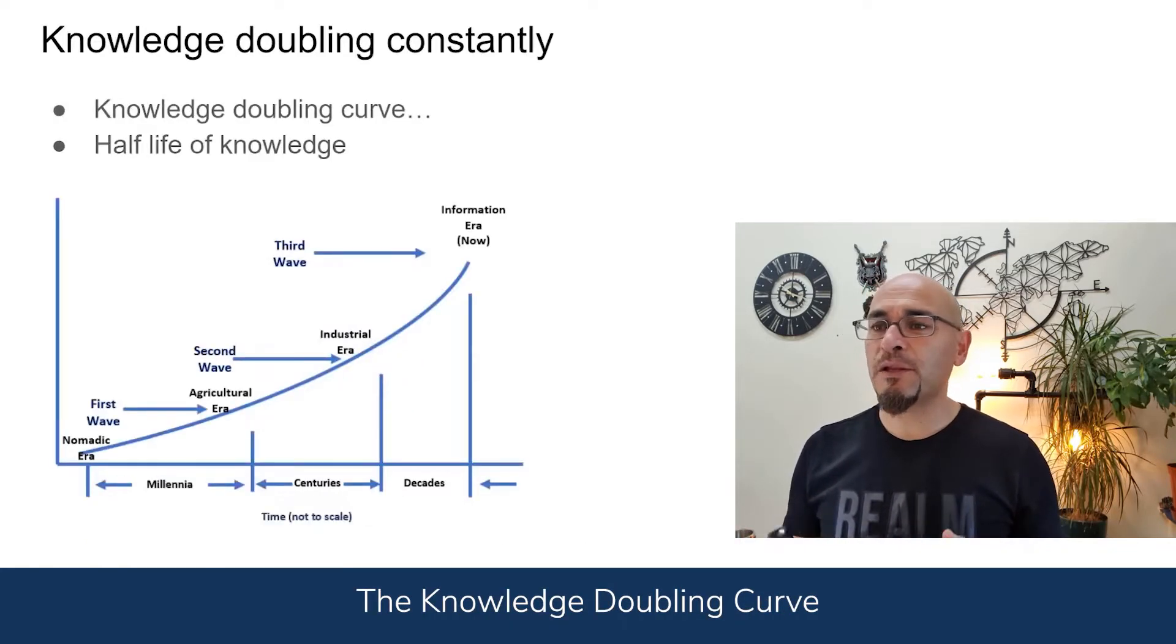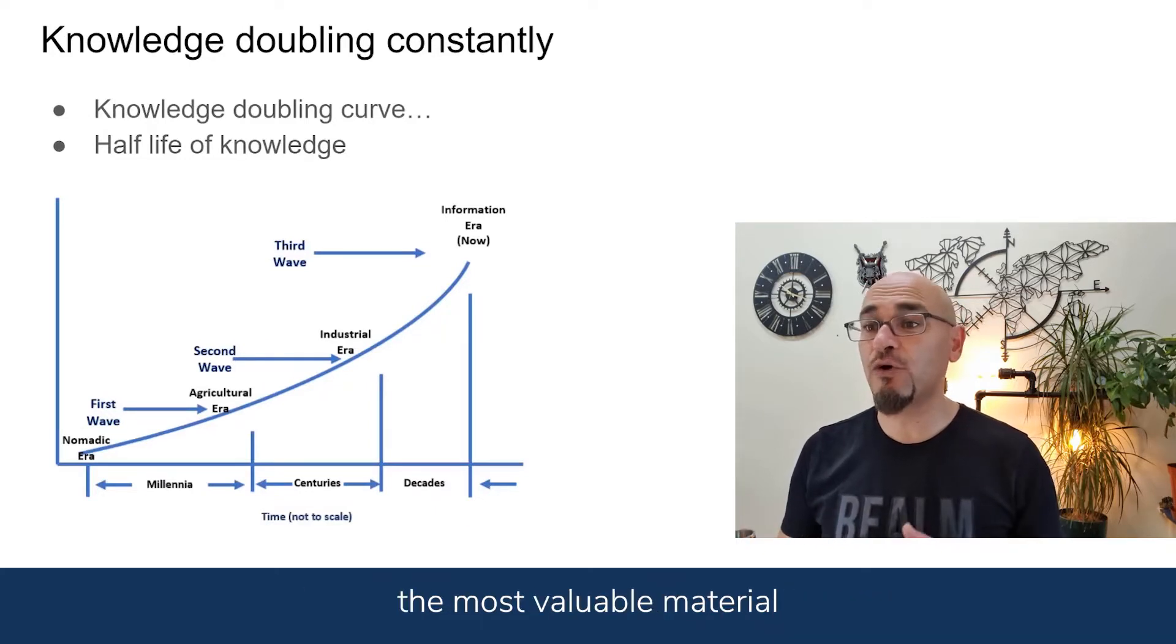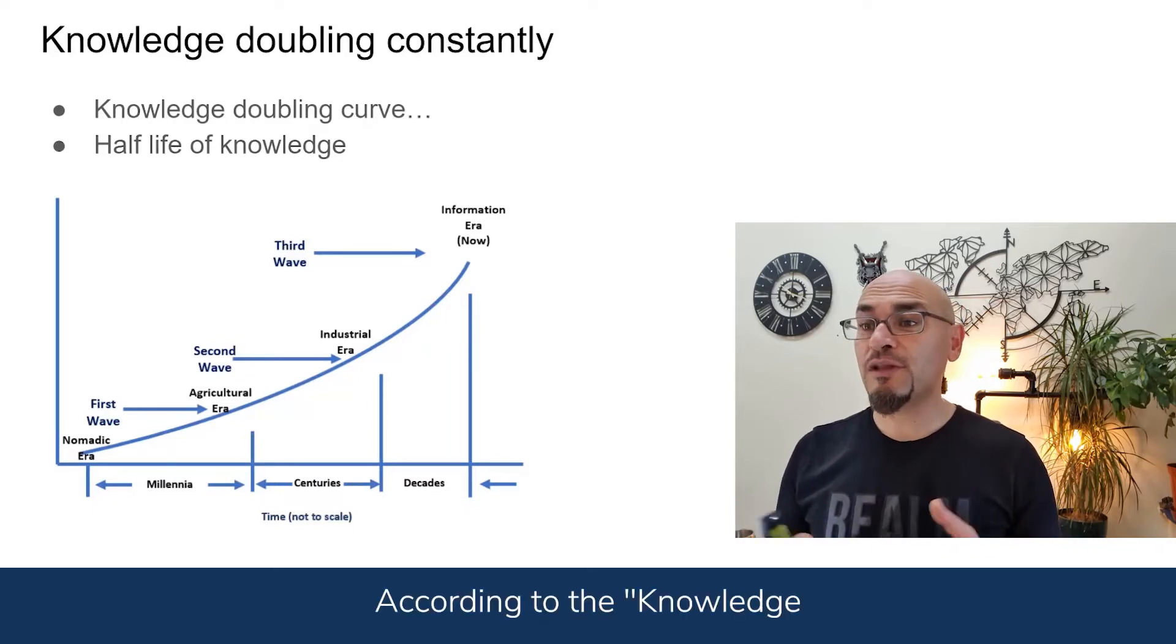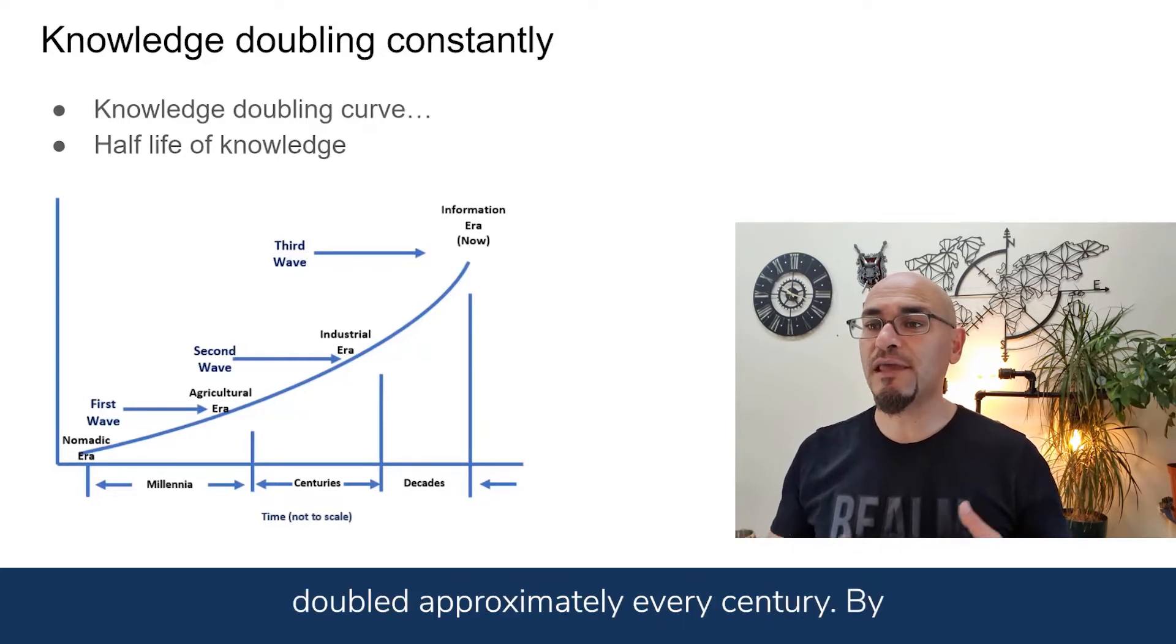The Knowledge Doubling Curve explains how information has become the most valuable material in the 21st century. According to the Knowledge Doubling Curve, until 1900, human knowledge doubled approximately every century.